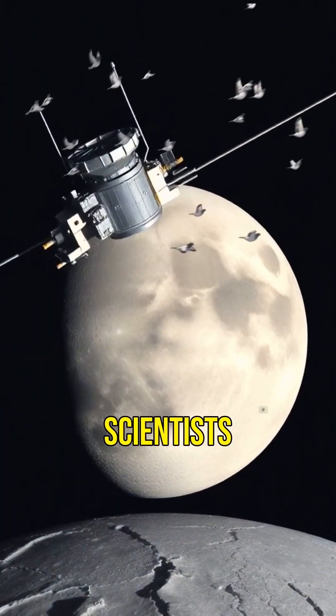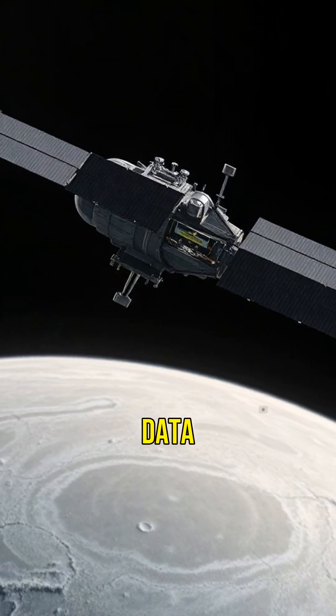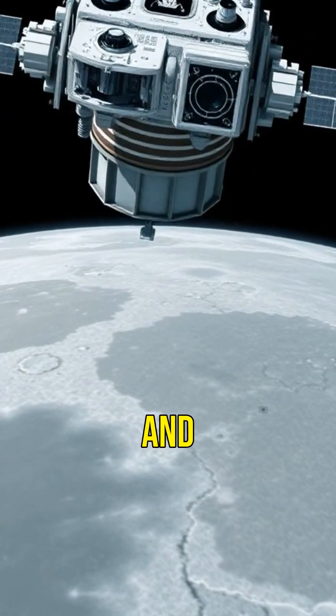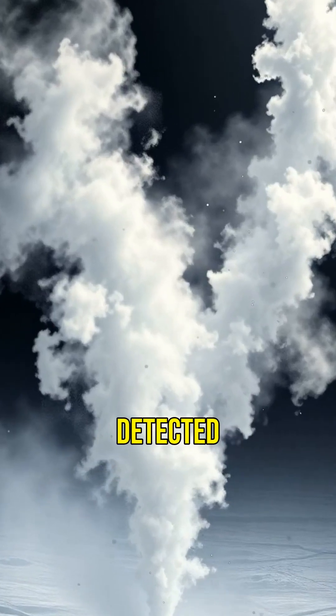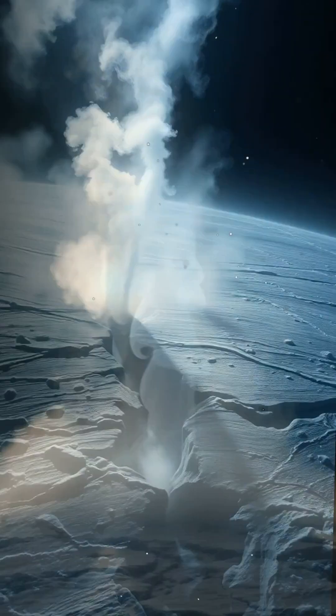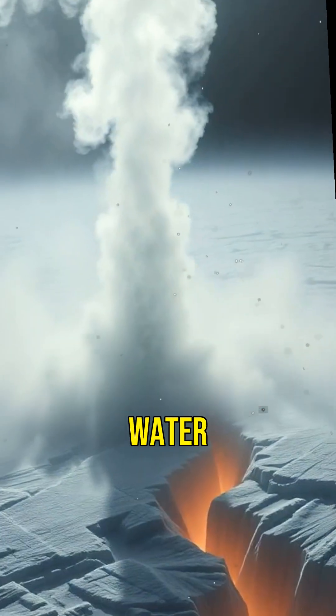But how do scientists know this? They use data from spacecrafts like Galileo and newer missions to study Europa's surface. These spacecrafts have detected signs of water vapor plumes, hinting at the presence of liquid water beneath the ice.